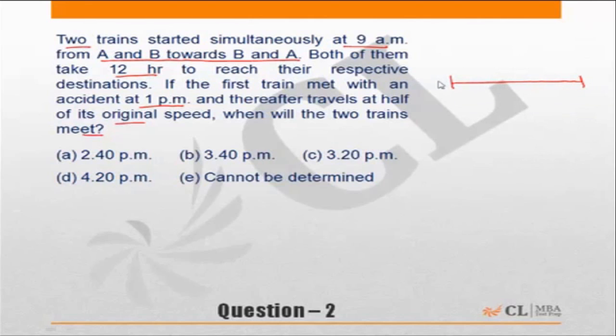Again, if I draw a schematic diagram, this is A, this is B. The train from A takes 12 hours to reach the destination. Similarly, the train from B will also take 12 hours to reach the other end.